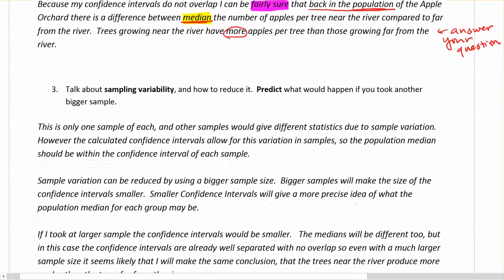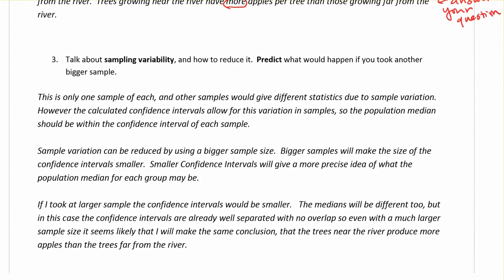Next thing for us to get into, this is the nitty-gritty, the really hard stuff to kind of interpret and talk about well for your particular situation. Make sure you're not just copying and pasting, but that you're typing this out and thinking about it as you write it. Same for the whole report. We'll be talking about sampling variability and how to reduce it, and we need to predict what would happen if we took a bigger sample. I'm probably just going to do this in a second video because it's going to drag on.